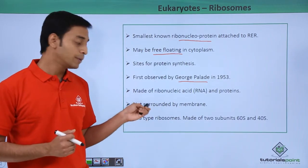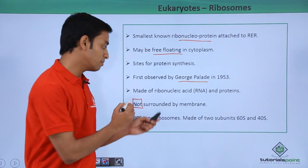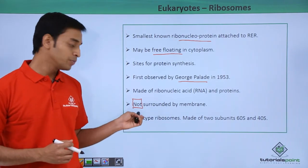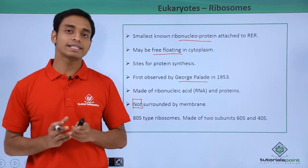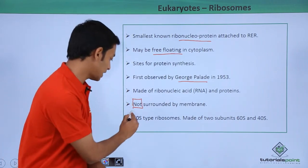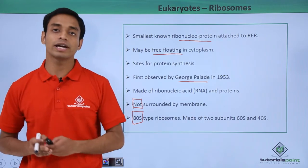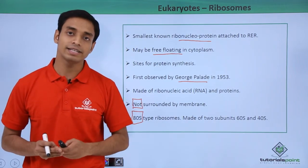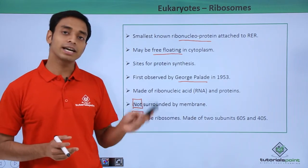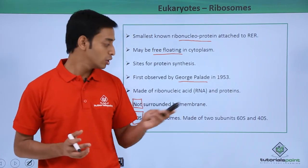Importantly, ribosomes are not surrounded by a membrane — they are non-membrane bound structures. The typical ribosomes present in eukaryotic cells are 80S type, as compared to the 70S type found in prokaryotes. The 80S ribosomes are made up of two different subunits: one larger subunit which is the 60S and one smaller subunit which is the 40S.